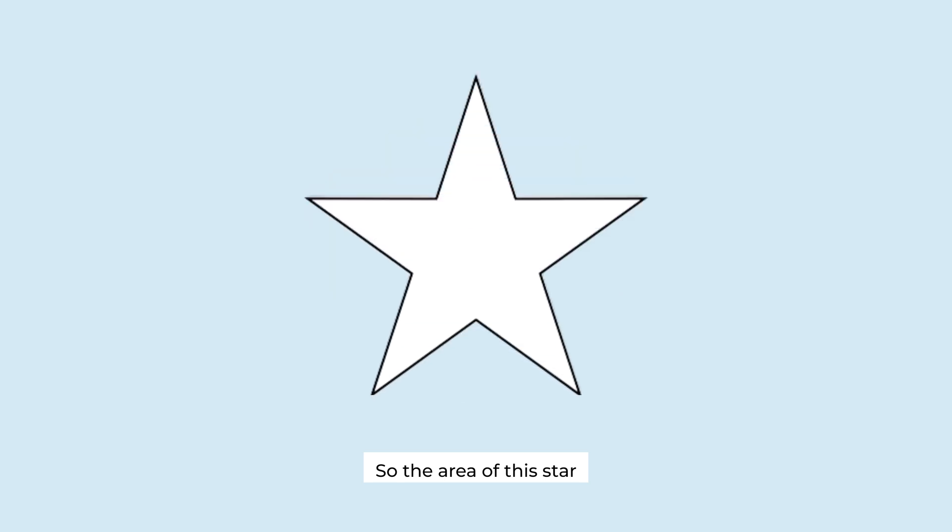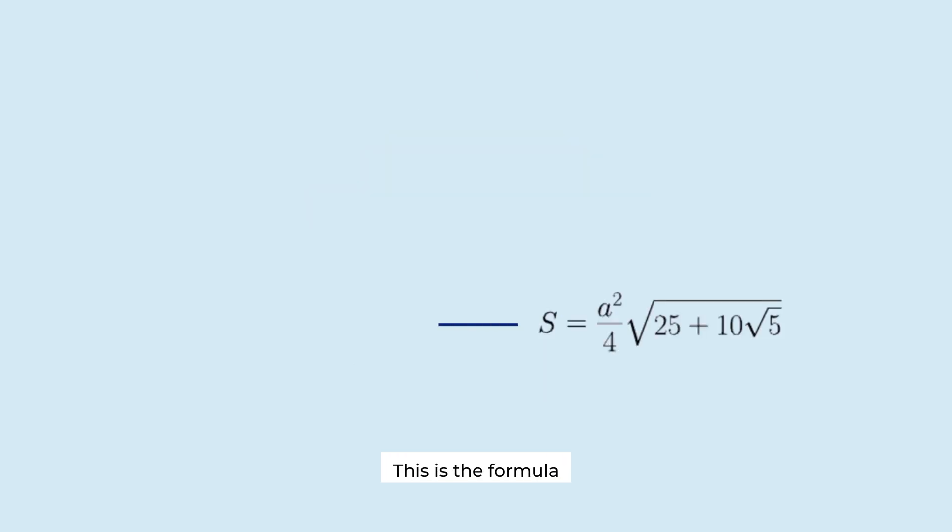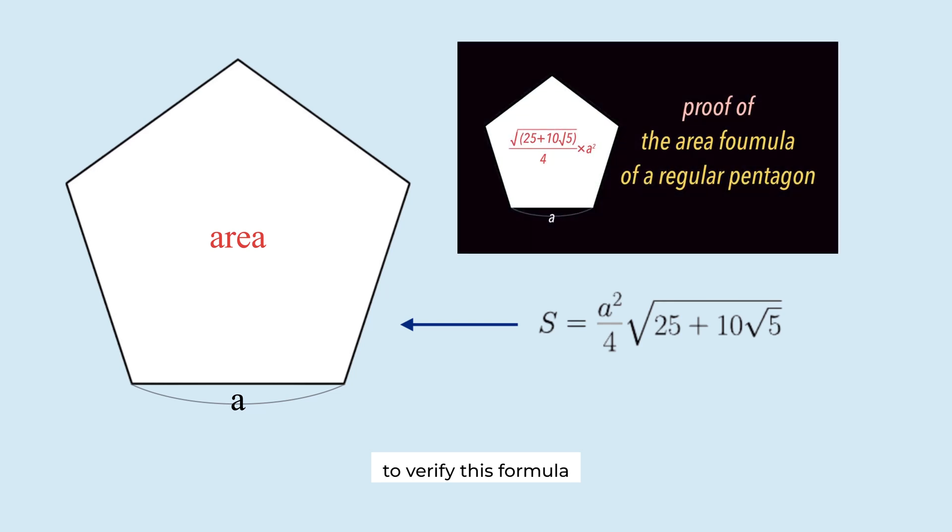So the area of this star is the area of the regular pentagon minus the total area of these five triangles. What is this? This is the formula for the area of a regular pentagon with the side length of A. I hope you will make sure to verify this formula through other content.